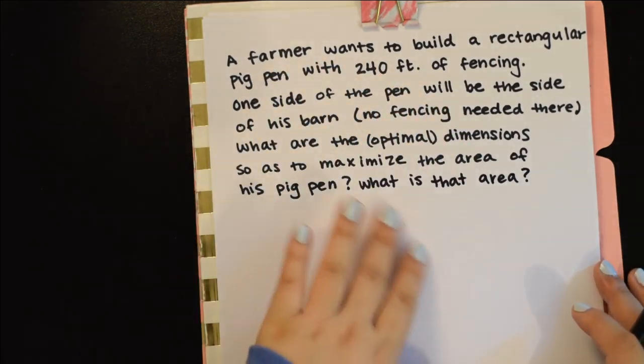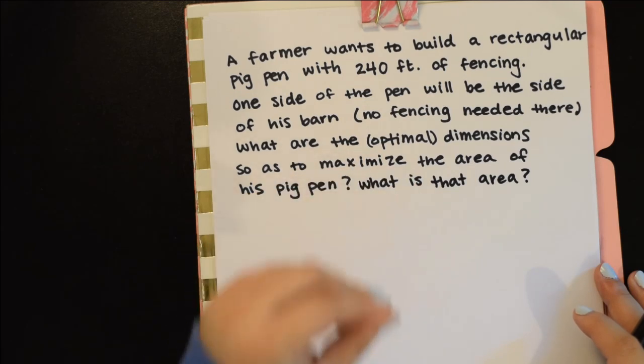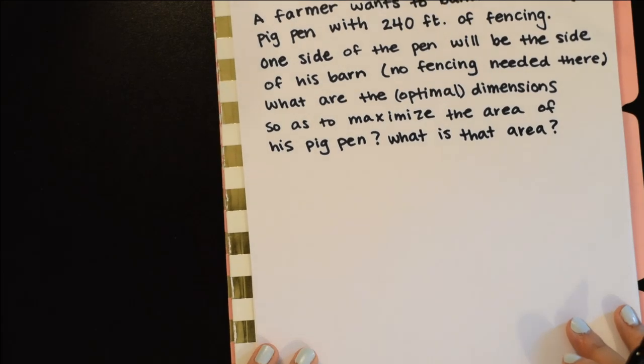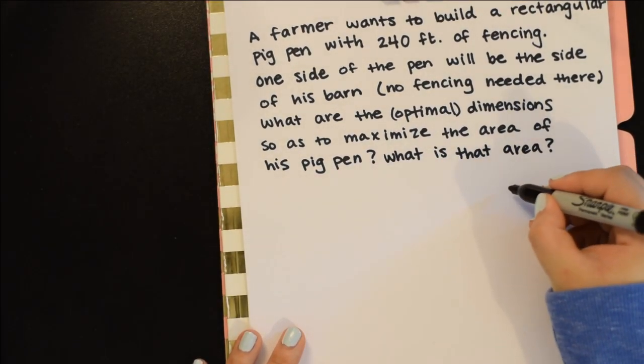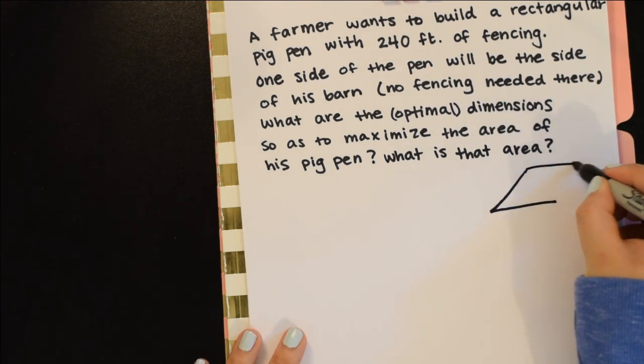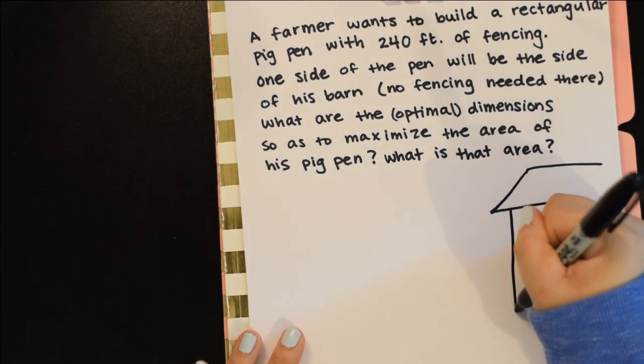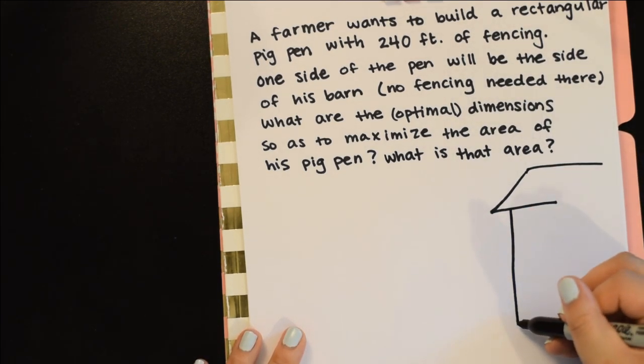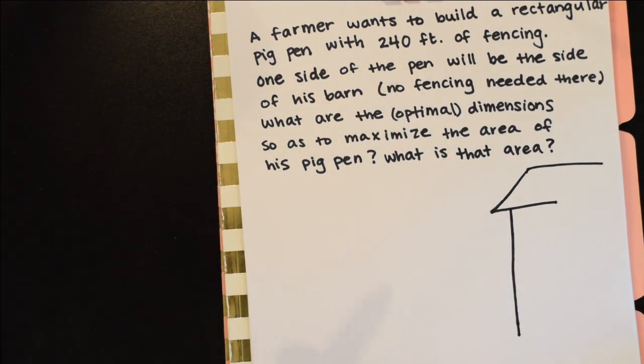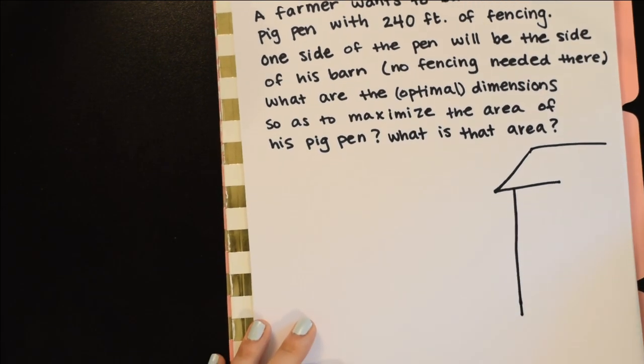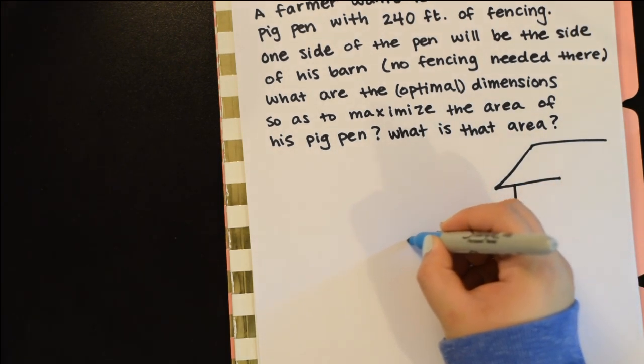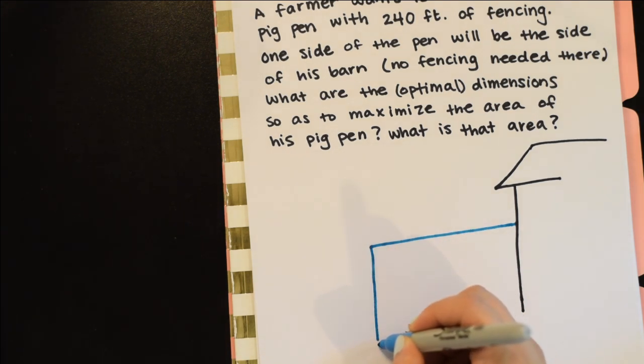Maybe I'm not so good at writing out English, but we can definitely draw a picture and do the math. So what this is: let's say we have a barn. This is just going to be the side, and so we have this part being one of the sides of our pen.